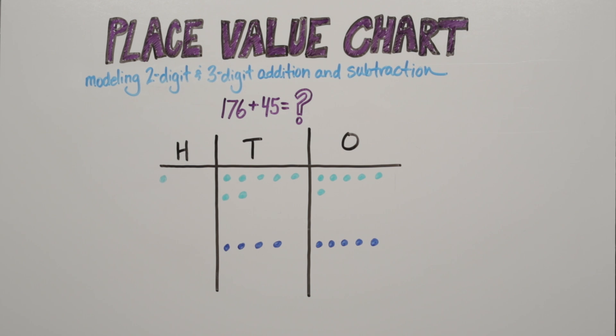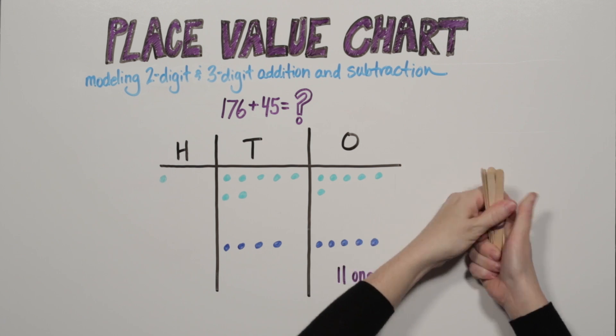First, we add the ones together. 6 ones plus 5 ones is 11 ones. If there are 10 or more ones, then we bundle.